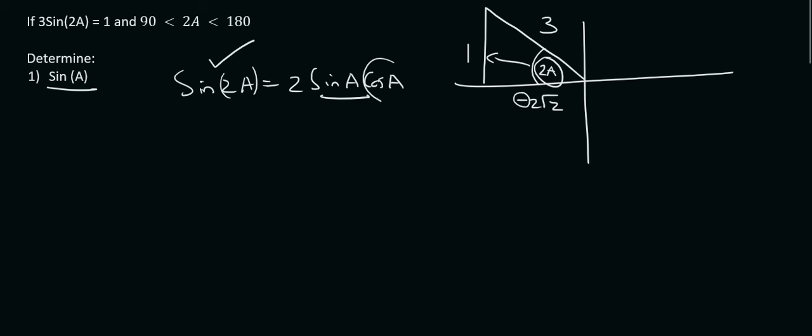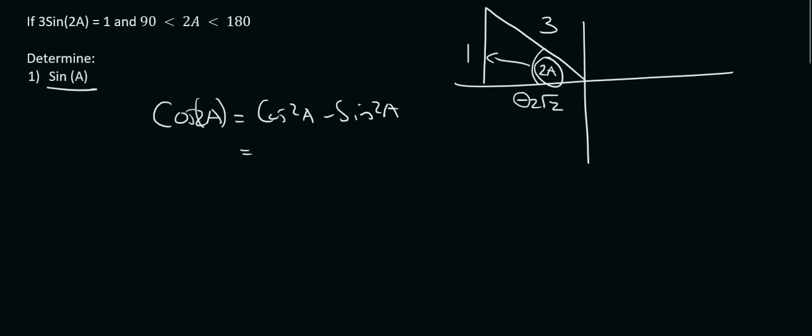But this doesn't help us because we're looking for sin A. We know what this one is, but we don't know what cos A is. So then we do something like this instead. We know that cos 2A, that can become cos squared A minus sin squared A. It can also become 2 cos squared A minus 1 and it can also become 1 minus 2 sin squared A. Remember those are all on your formula sheet.